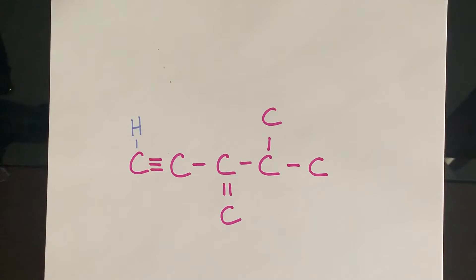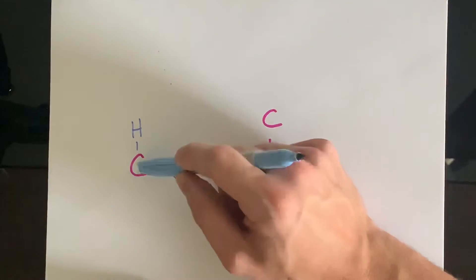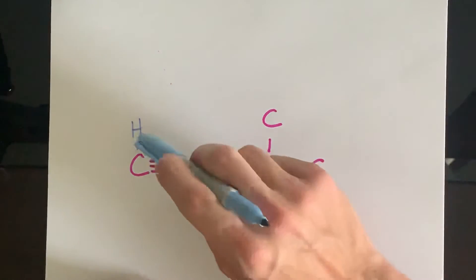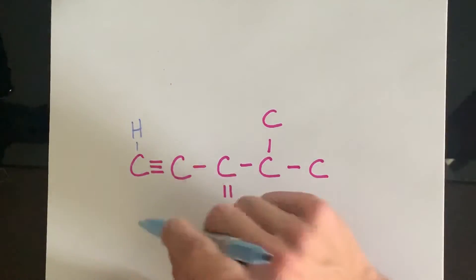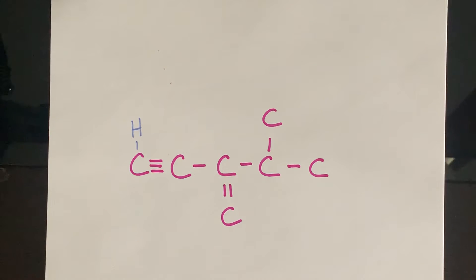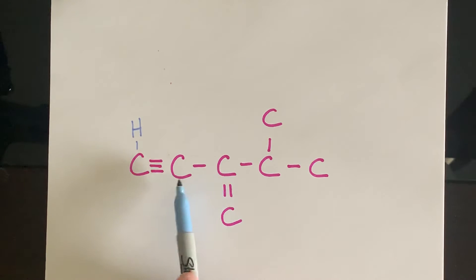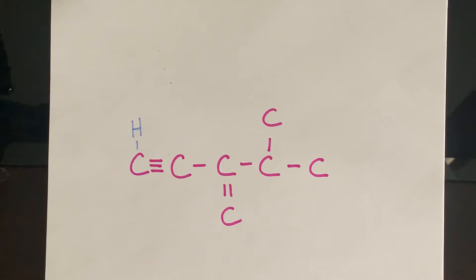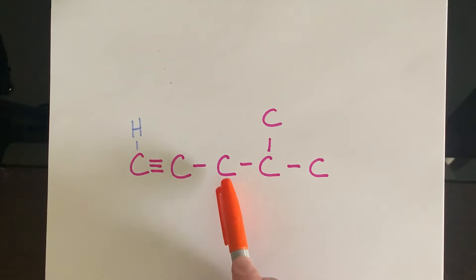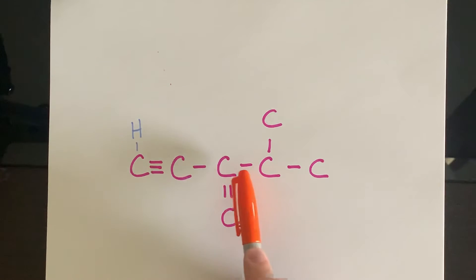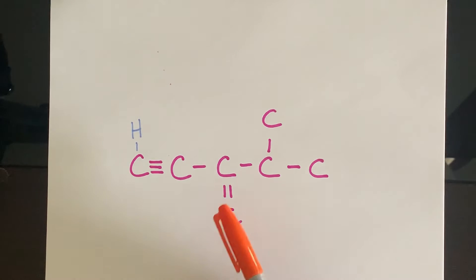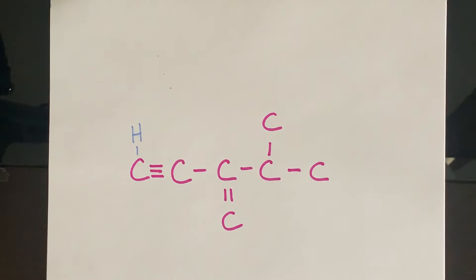You might be asking: does it matter if the hydrogen goes up top, down low, or to the side? No, it does not — you can put that hydrogen wherever you want. Moving over to carbon number two: to the left it's bonded with that triple bond, and to the right it's bonded once — so we have one, two, three, four bonds already. It's done. Carbon number two is already stable and complete. Moving over to carbon number three, we have a bond to the left, a bond to the right, and two bonds down below — one, two, three, four. It's already done too.